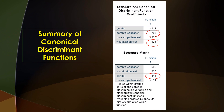Moving on to the summary discriminant functions — analyzing the discriminant function coefficient tables, it shows that only parents' education and visualization are weighted heavily to maximize the discrimination between groups. Gender correlates with parents' education and has a low function coefficient. Looking at the structure matrix chart, gender has a higher correlation of negative .45, because it is correlated with the discriminant function that best predicts who took Algebra 2 and who did not.